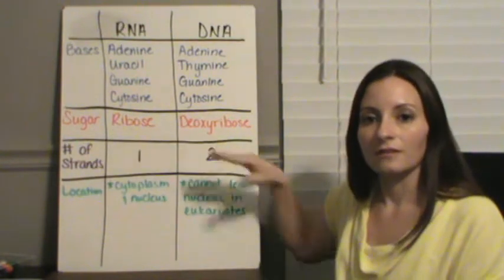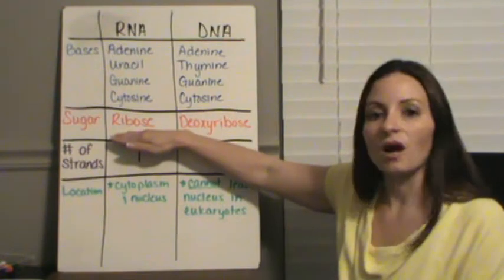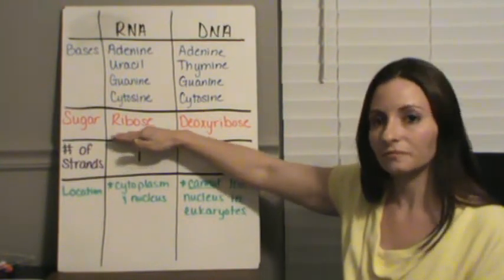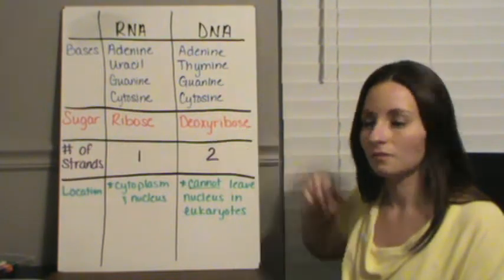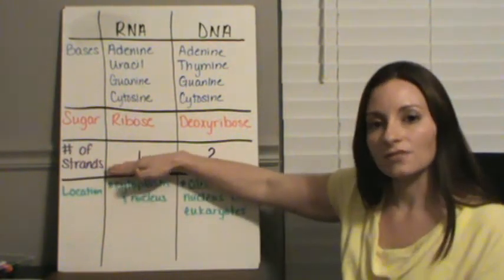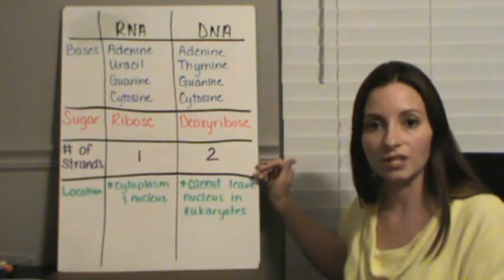The sugar that makes up RNA is slightly different also. The sugar that makes up RNA is called ribose, whereas the sugar in DNA was deoxyribose. RNA can also be single-stranded, whereas DNA always contains two strands.